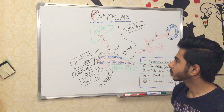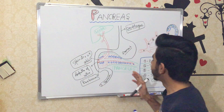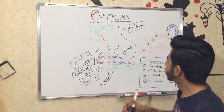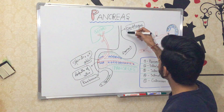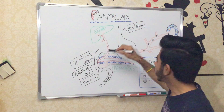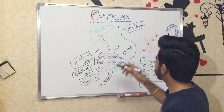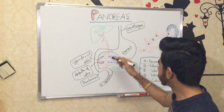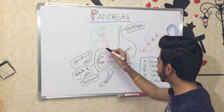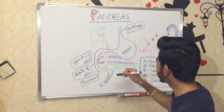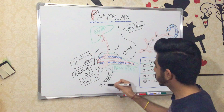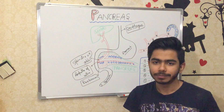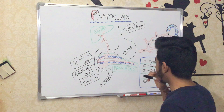Here I have drawn a very basic diagram of our gastrointestinal tract. The esophagus starts from here and continues into the stomach, and the stomach continues into the first part of the small intestine, which is the duodenum — the U-shaped or C-shaped duodenum. The duodenum continues into the jejunum and ileum and meets with the large intestine at the cecum.